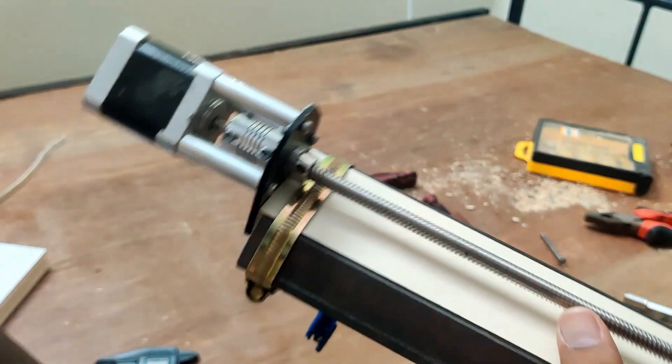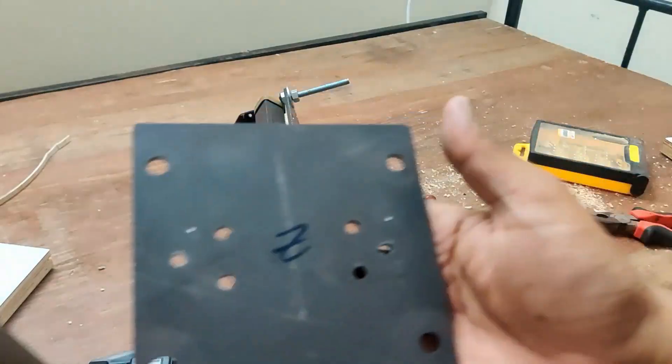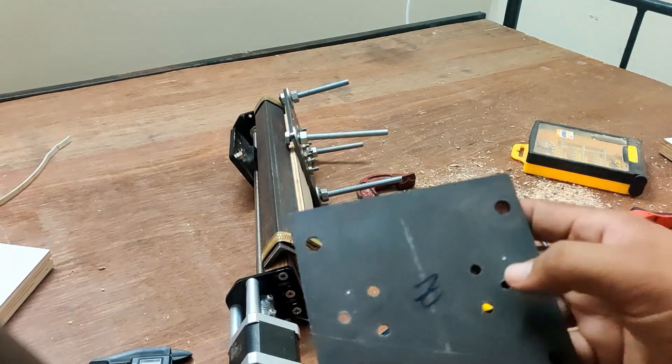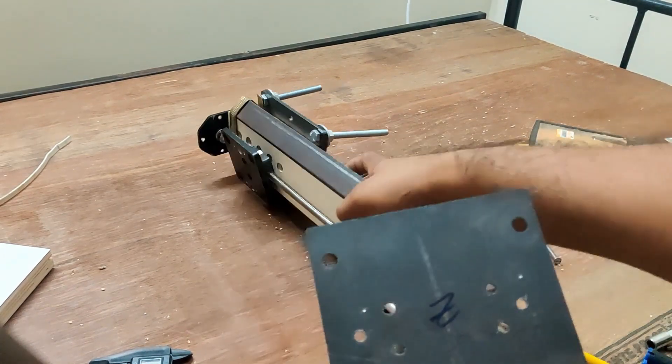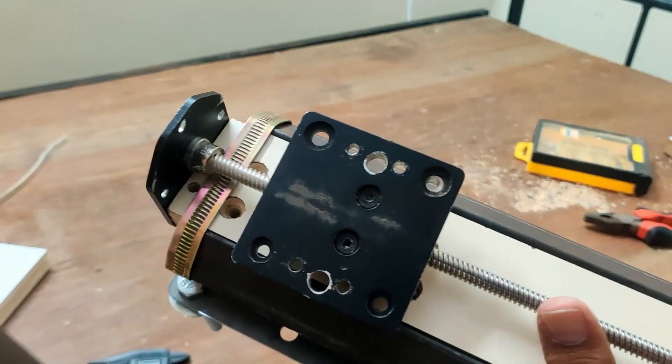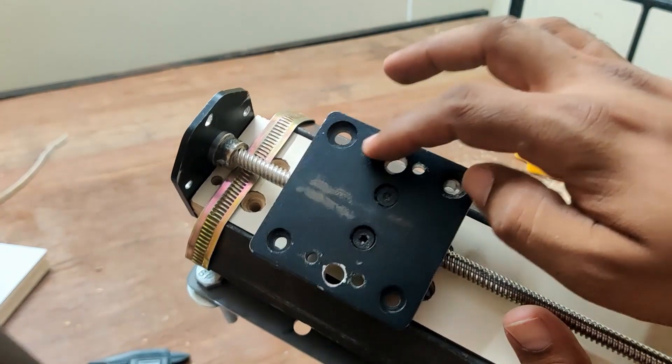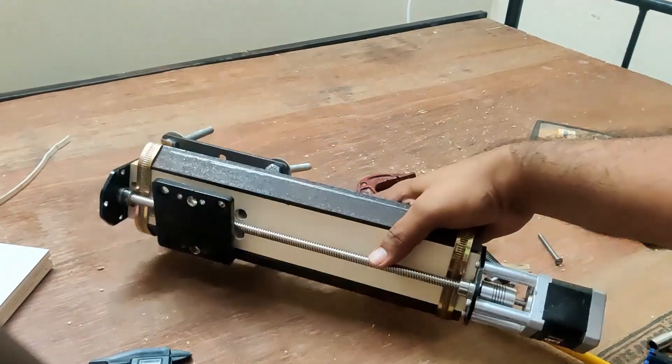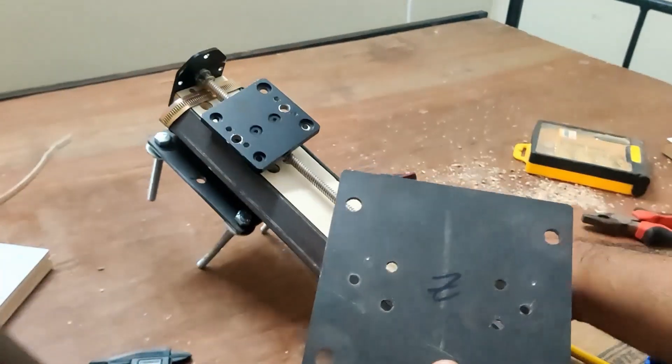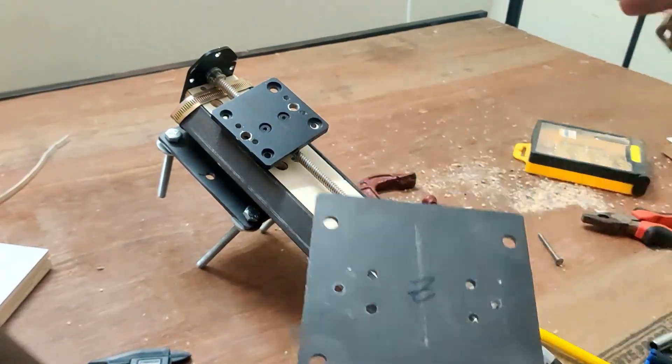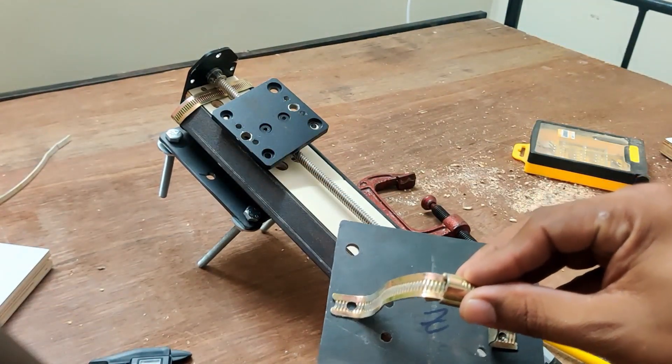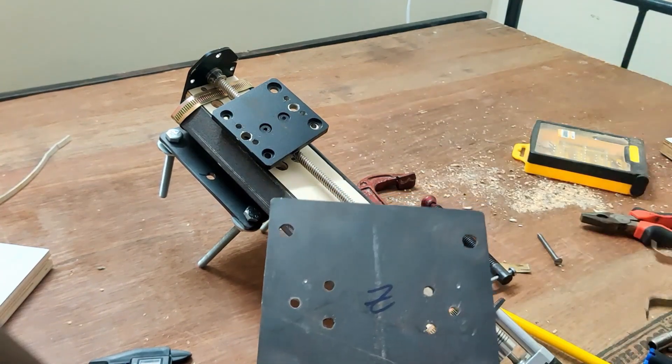Next step is to mount the z gantry plate on the z-axis. These four holes here are aligned with the delrin plate that came with the 3D printer. I made sure they aligned properly. This is the spindle mount that goes here. I cut a belt clamp and used that.